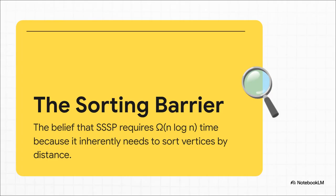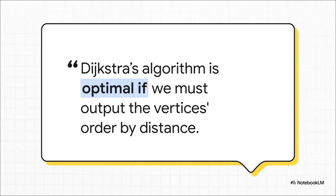See, because Dijkstra's algorithm is constantly asking itself, what's the absolute closest place I haven't been to yet? It's, at its core, a sorting problem. It has to keep all its options in a perfectly neat, ordered line. And that created this theoretical wall, the sorting barrier. For decades, everyone just assumed you couldn't find the shortest path without first solving this sorting problem. And this right here was the very lock on the vault.